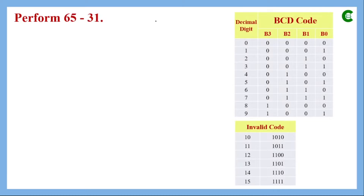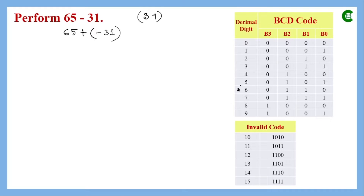We want to subtract 31 from 65. In decimal, the result is 34. We must perform this using BCD code. Since 65 is positive, we take its normal BCD equivalent: 6 is 0110, and 5 is 0101. For 31, since we are adding minus 31, we will find its 9's complement representation.